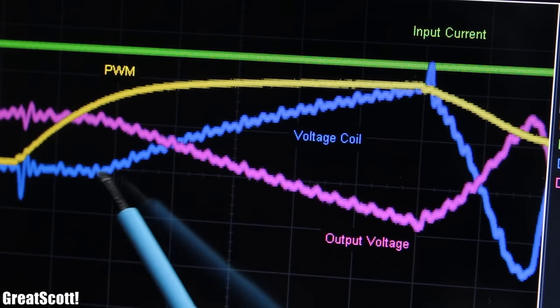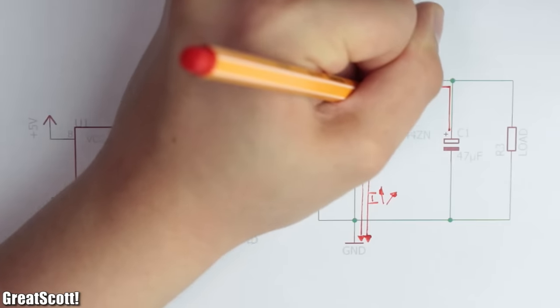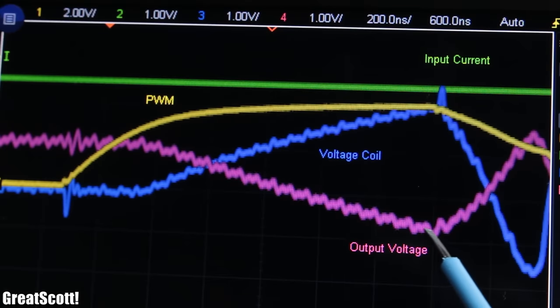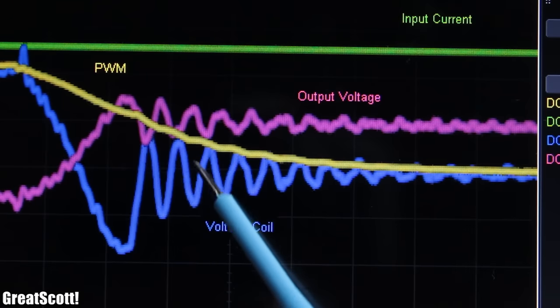While the switch is closed, the coil builds up its magnetic field, but the capacitor also discharges itself through the switch. After the switch is open, we only get a damped oscillation on the output and almost no voltage boost.